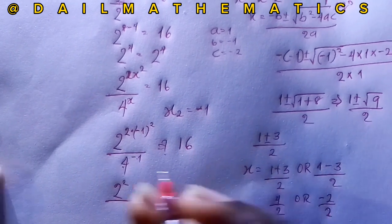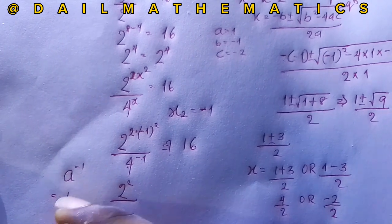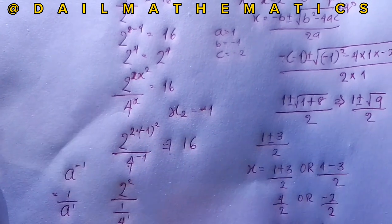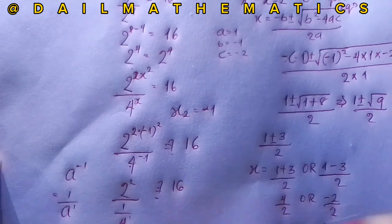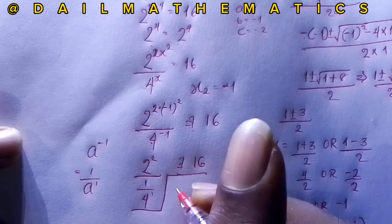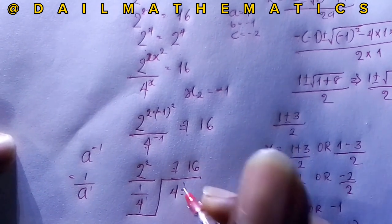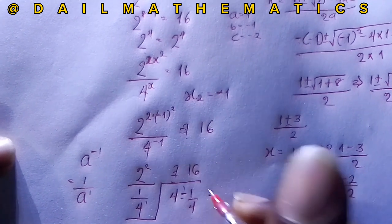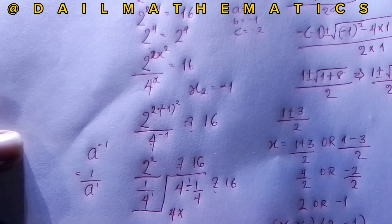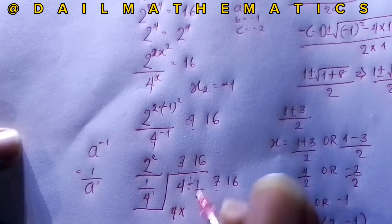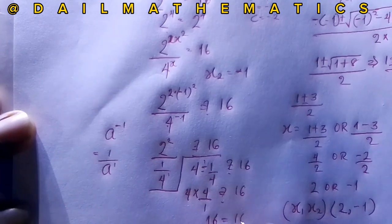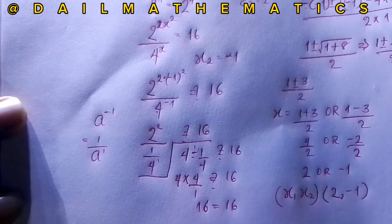By the law of negative exponents, 4 raised to the power of −1 equals 1 over 4. So we have 4 divided by (1/4). Dividing by a fraction means multiplying by its reciprocal: 4 times 4 over 1 gives us 16. So x equals −1 is also correct.